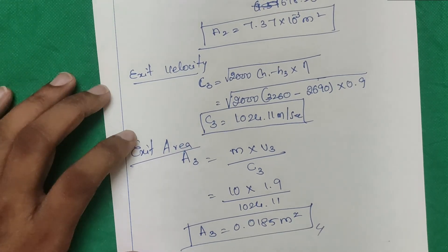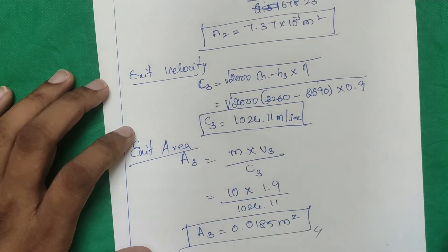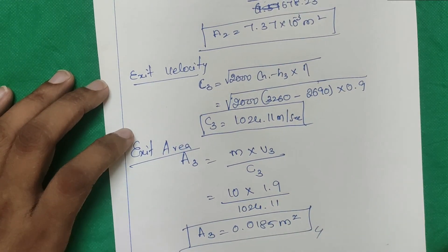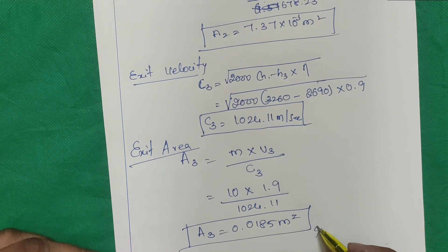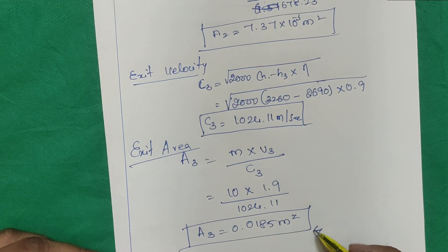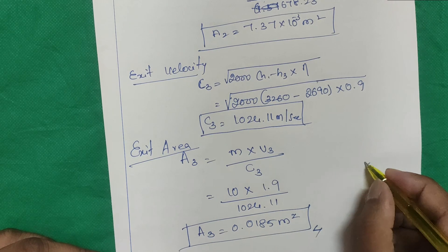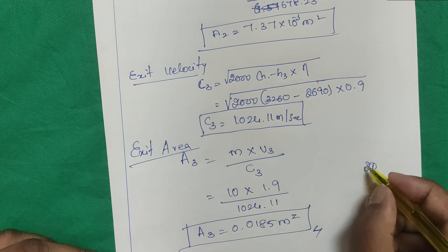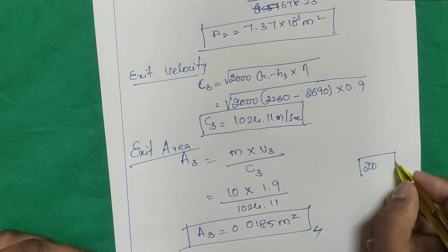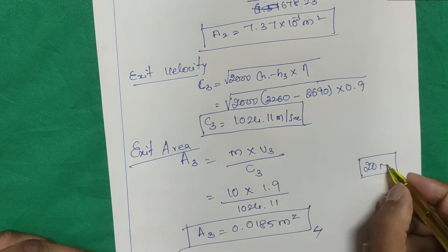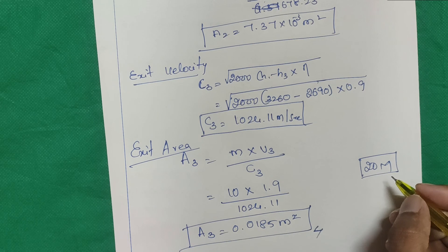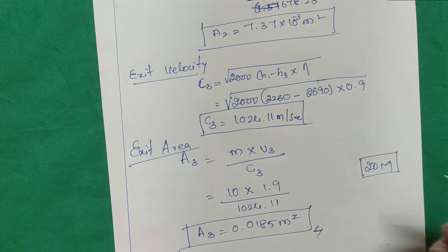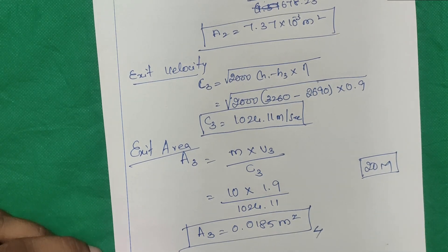This completes the nozzle problems. This is a very simple chapter — Module 5 Part B — and students should not miss it, as it can easily carry 20 marks in the exam.